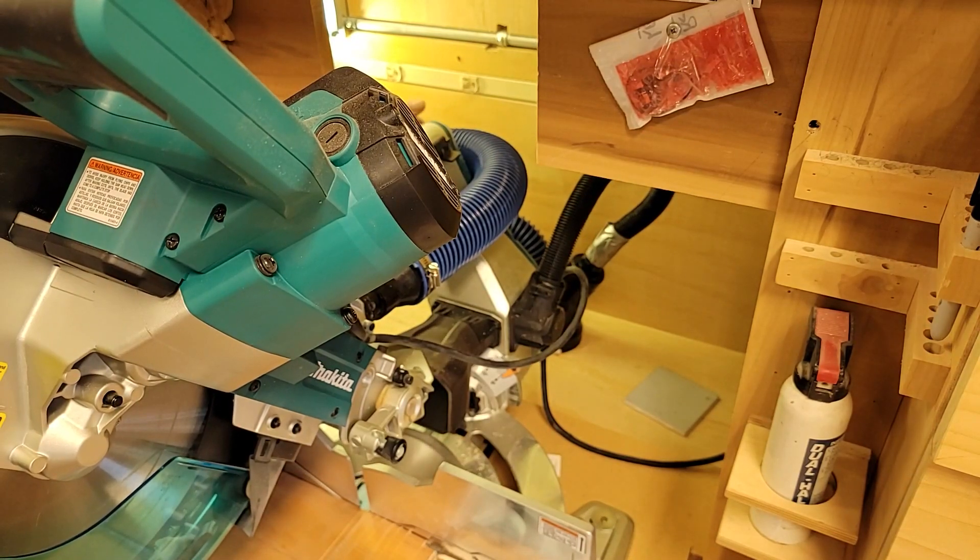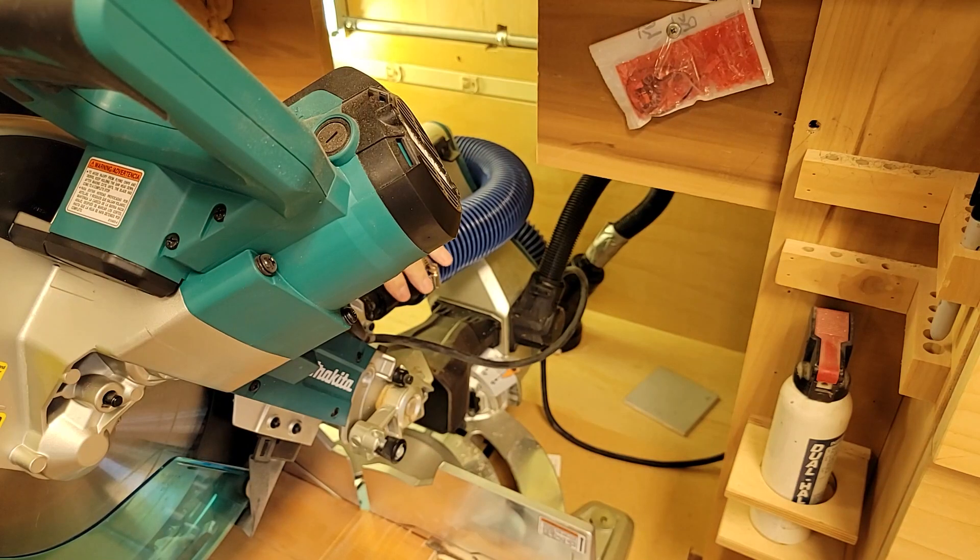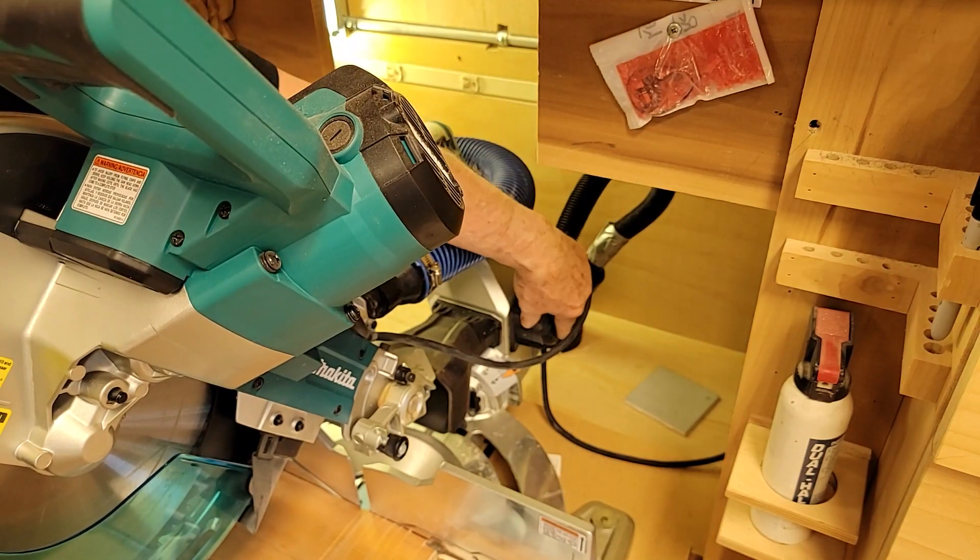So we got the 4-inch to 2.5-inch coming up here, and we got the 4-inch to the 1-inch coming here on the side. So that gets both the stuff going in the chute here and from that hose, and from this hose it gets everything that's being thrown off the blade.